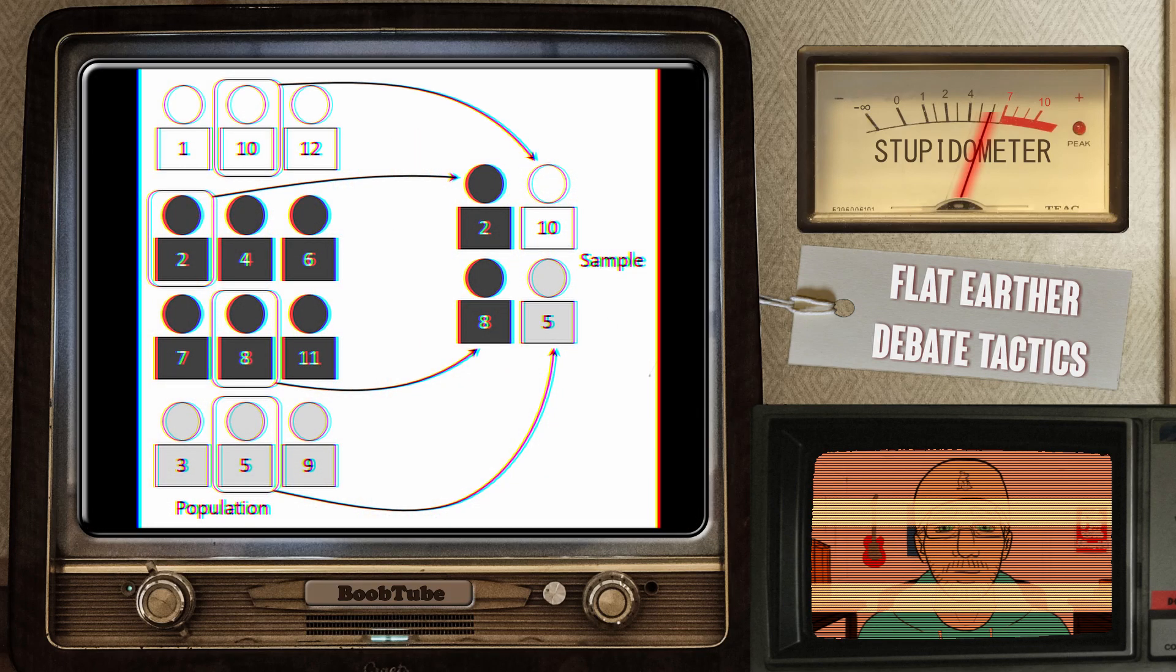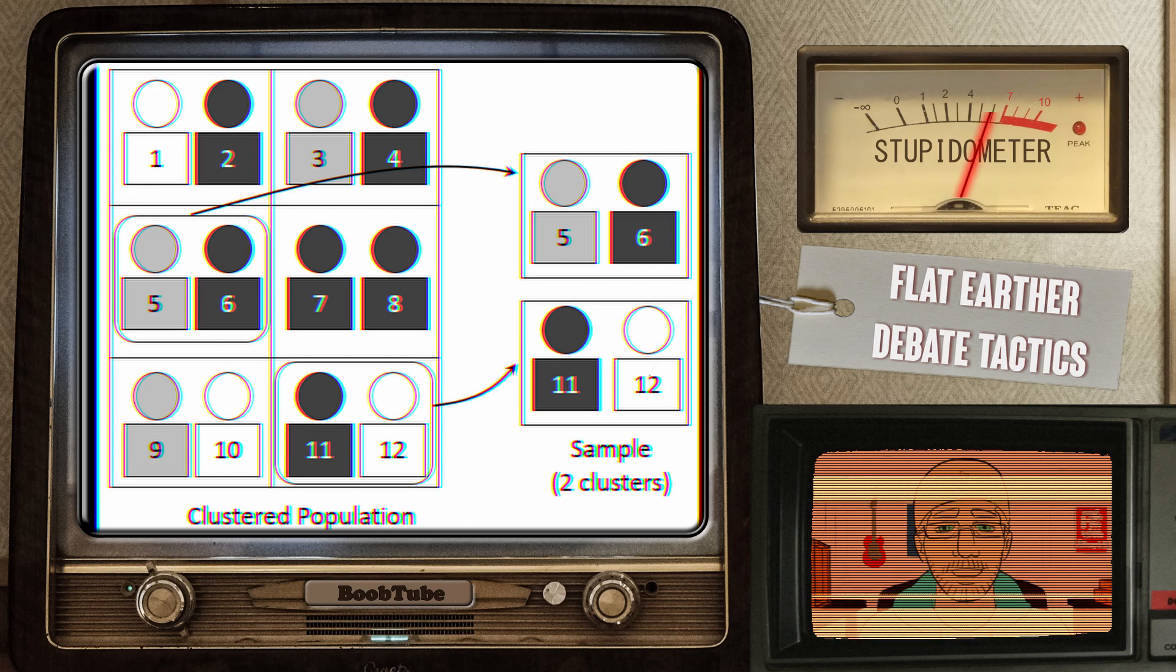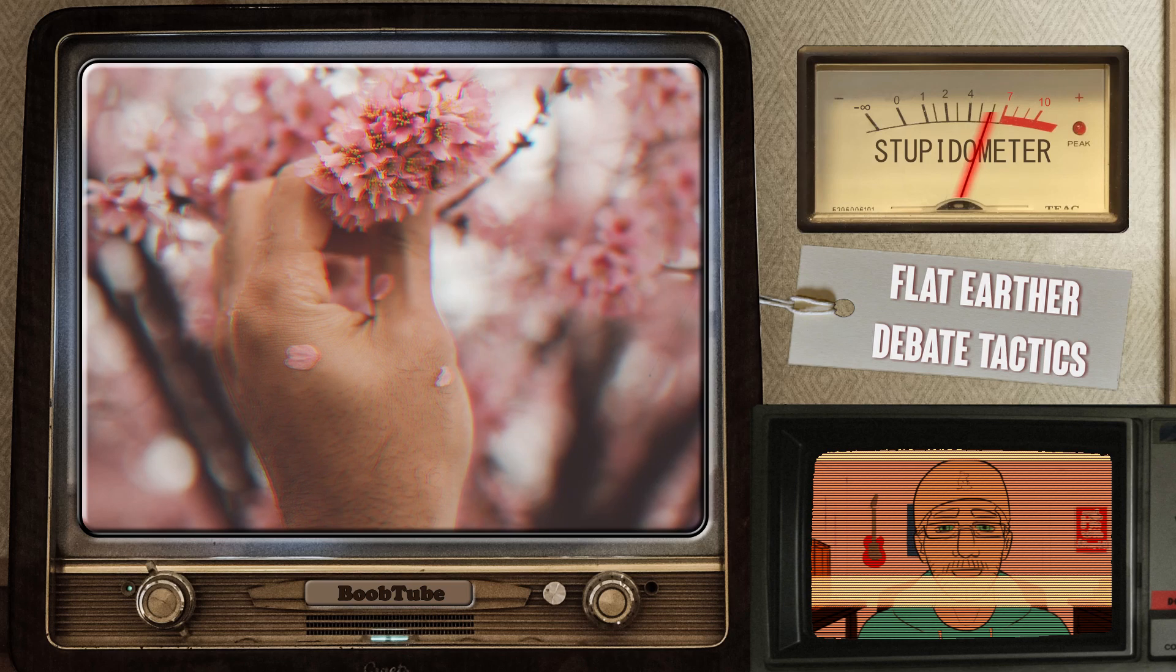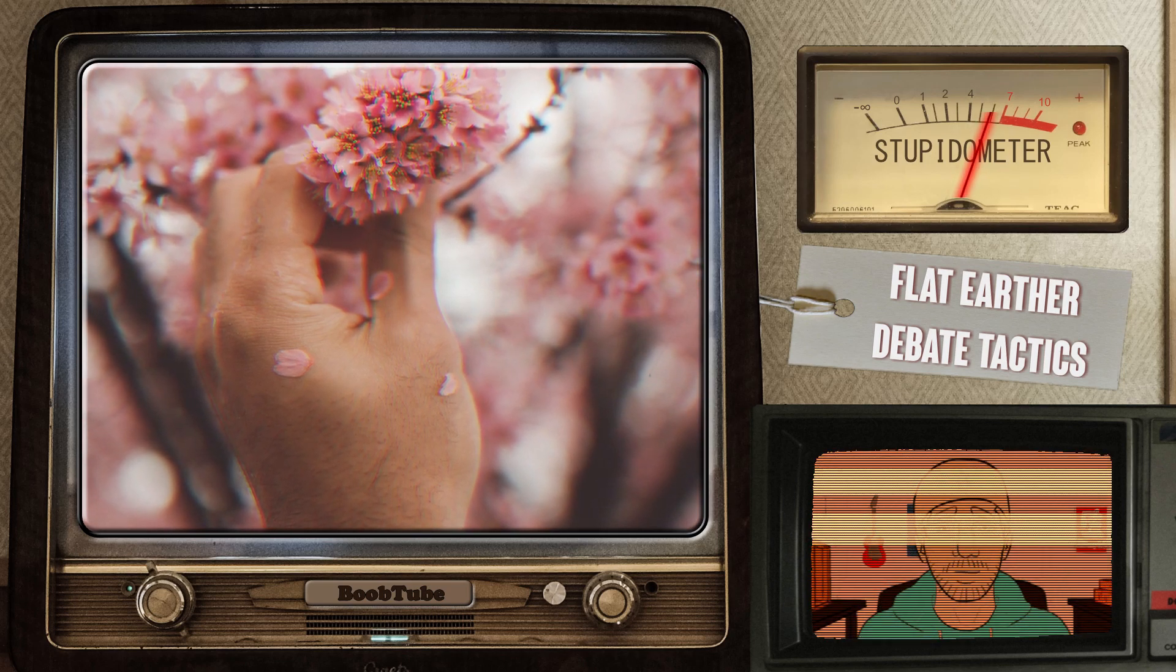Another approach can be selecting some points to refute. Just like statistics, it can be simple random sampling, meaning you can just choose some points. Or it can be more like stratified sampling or cluster sampling, meaning you are grouping these points based on some criteria and then addressing the group instead of individual points. The issue with these responses are, flat earther would often accuse you of cherry-picking arguments and fall back to those that were not addressed in your rebuttal.